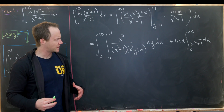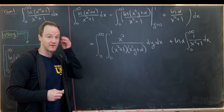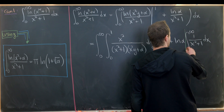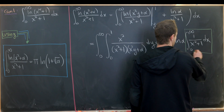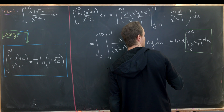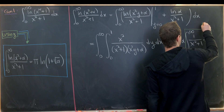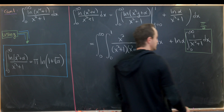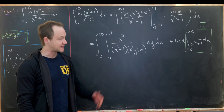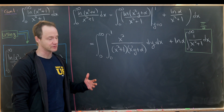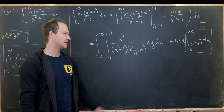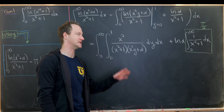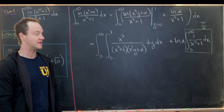I'm going to write down the value for some standard integrals. The integral from zero to infinity of 1/(x² + 1) equals π/2, because the antiderivative is arctan(x). Pushing the argument to infinity gives π/2, and plugging in zero gives zero. So that's where we get π/2.